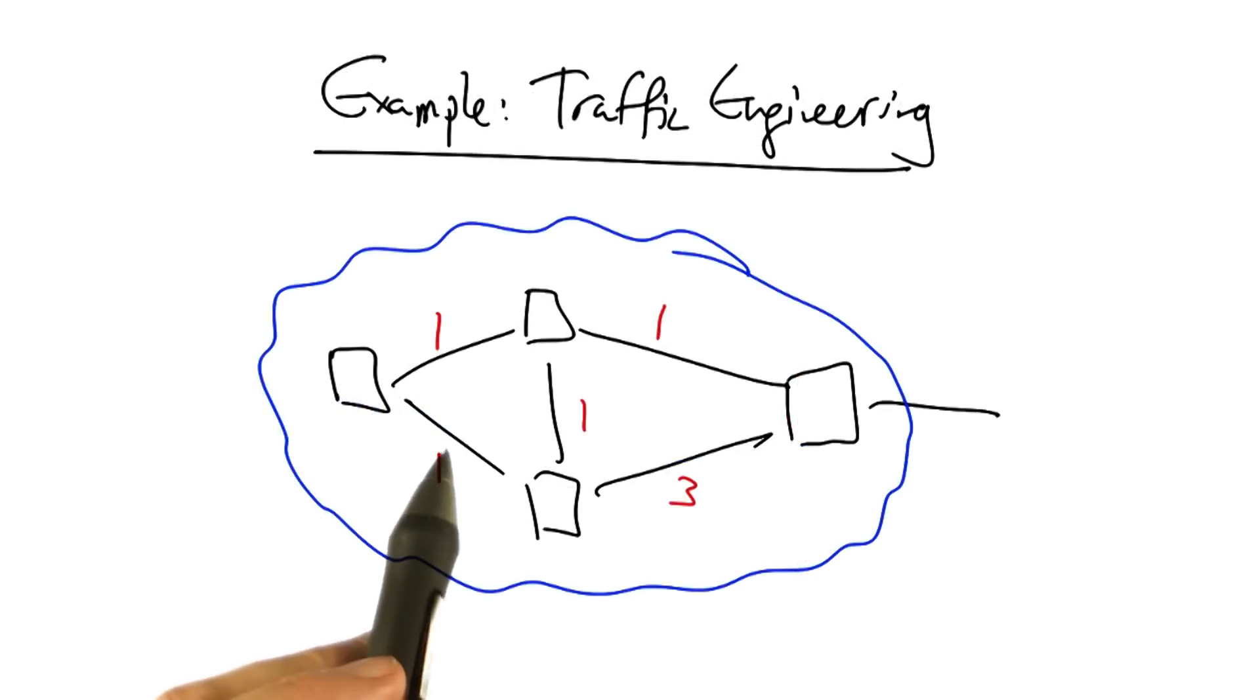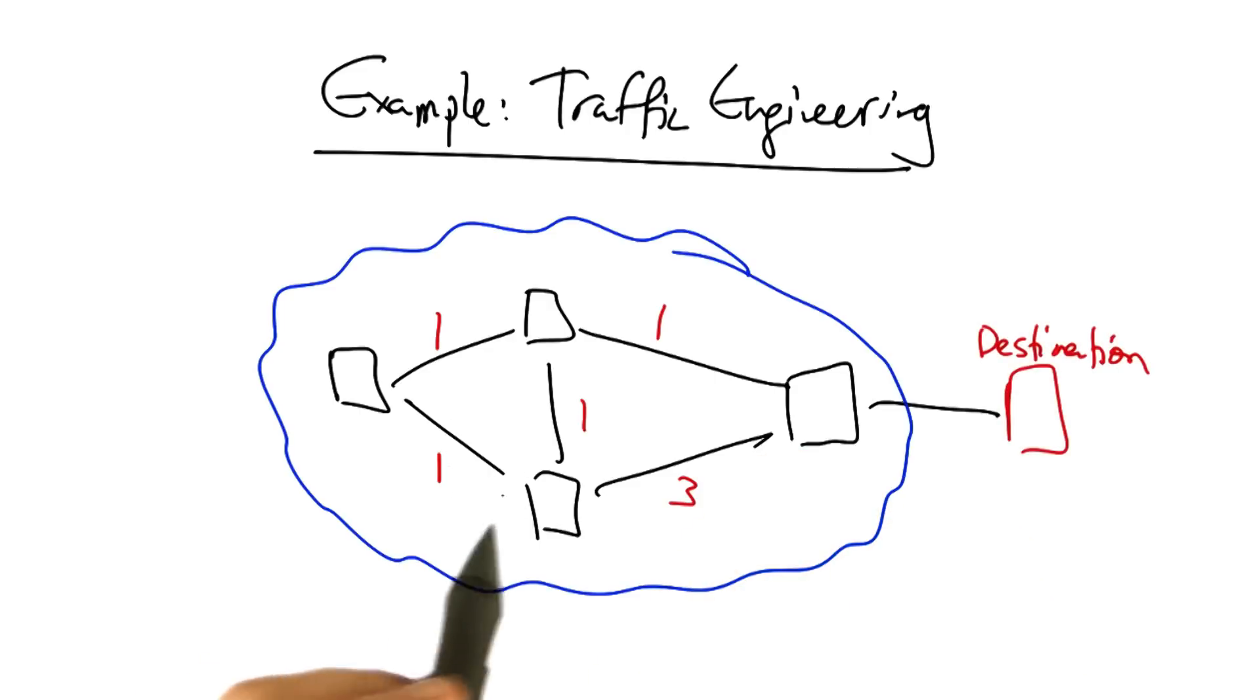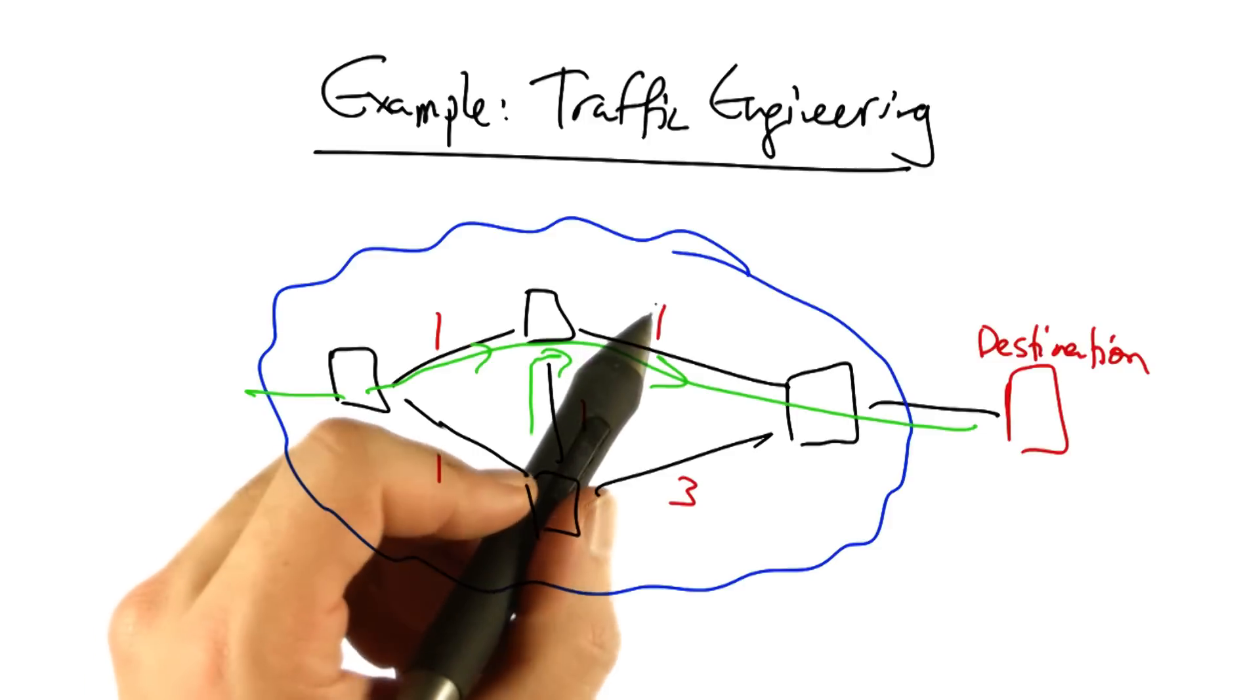Let's consider a case where we have a network that is performing shortest paths routing to some destination. And the link weights are as I've shown here in the figure. Traffic in the network would flow along the paths shown in green.